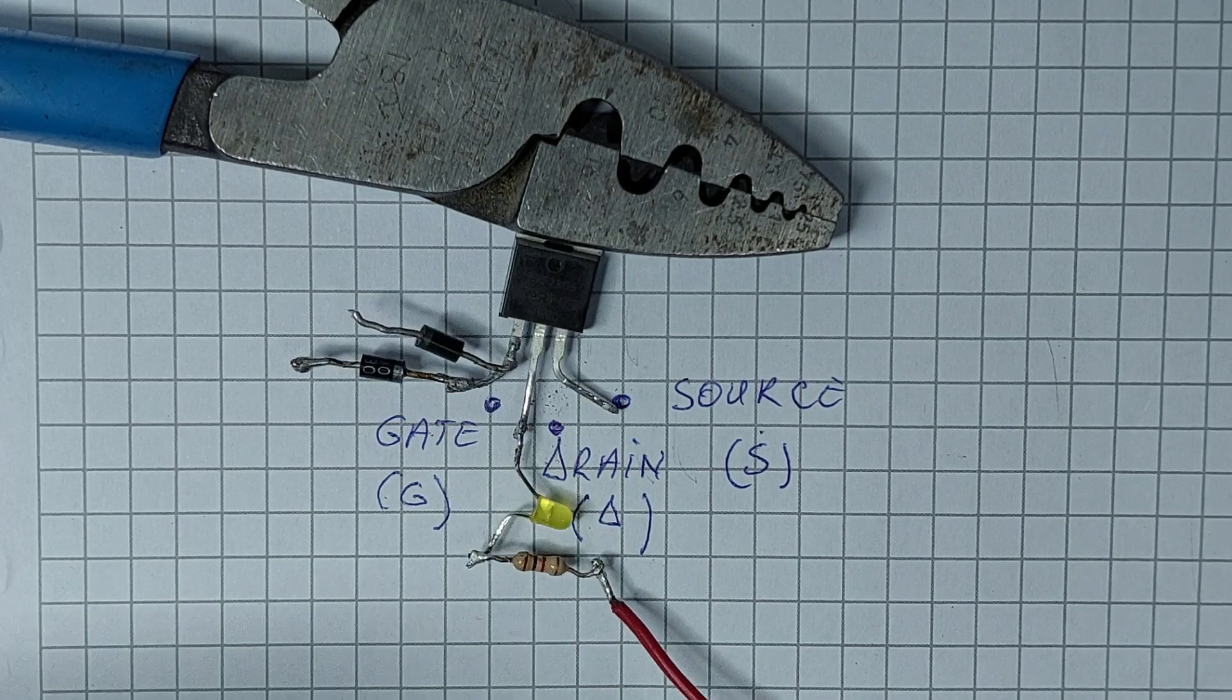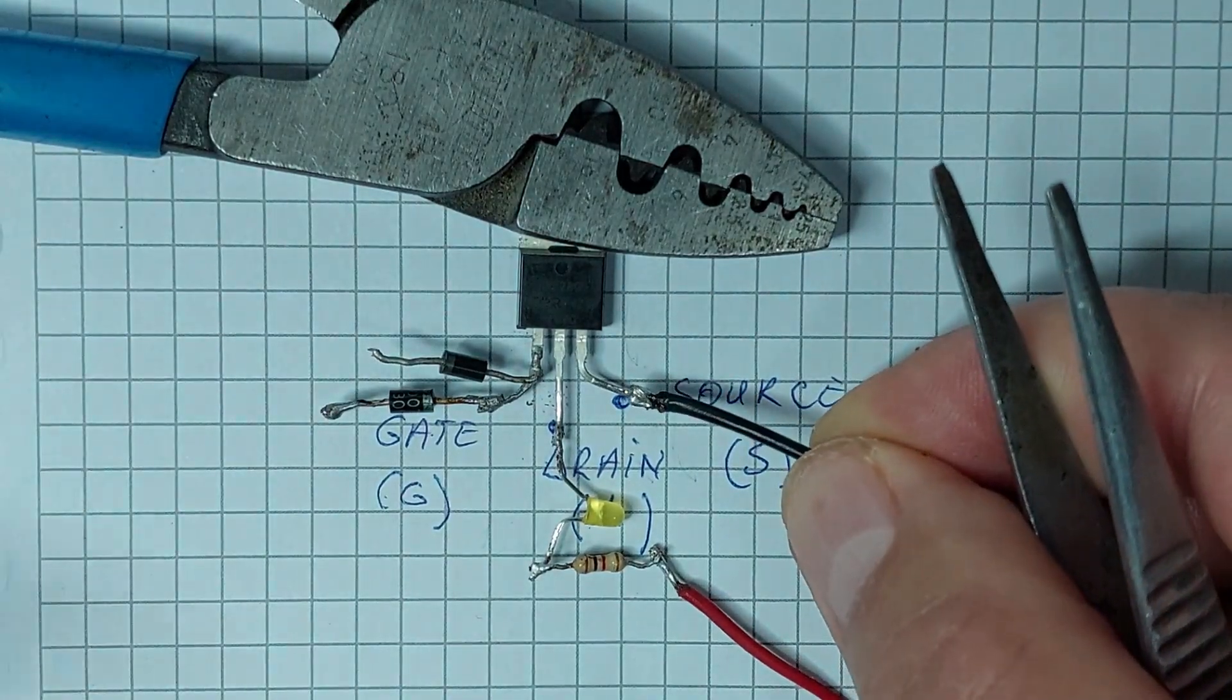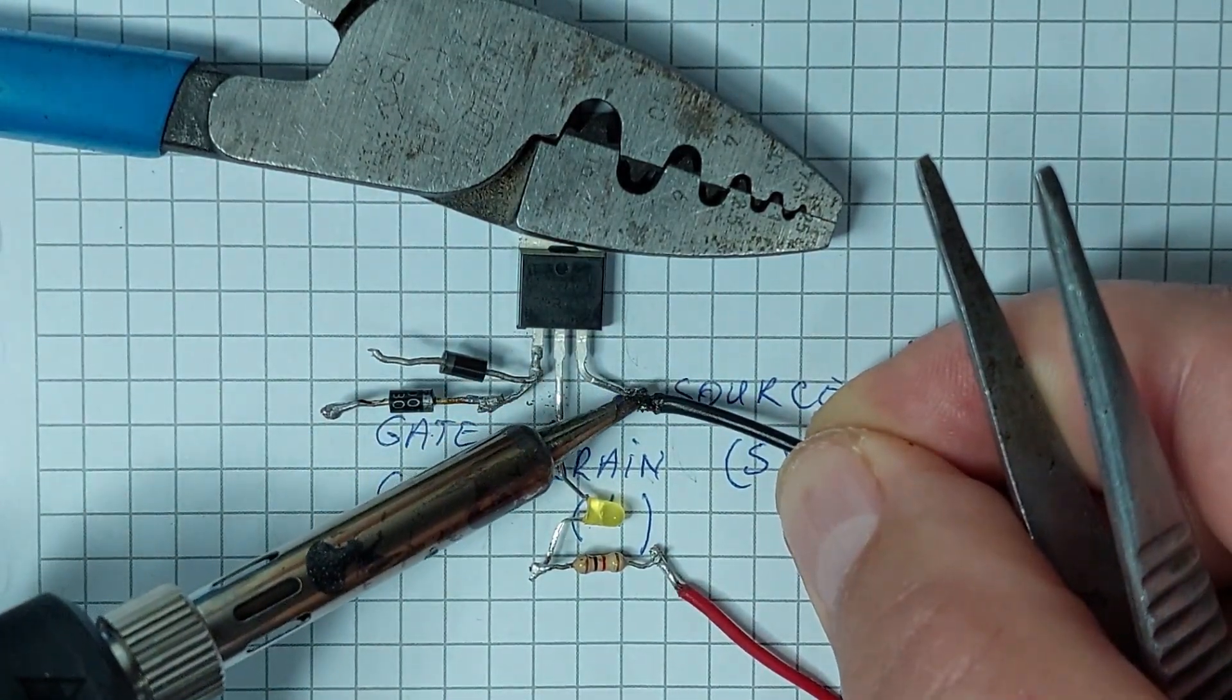Now, I'm connecting the source pin of the MOSFET to the negative terminal of the DC power supply. With this connection, we've completed the basic circuit setup.